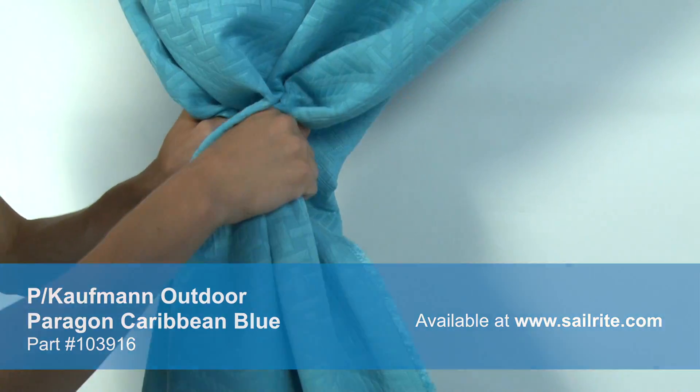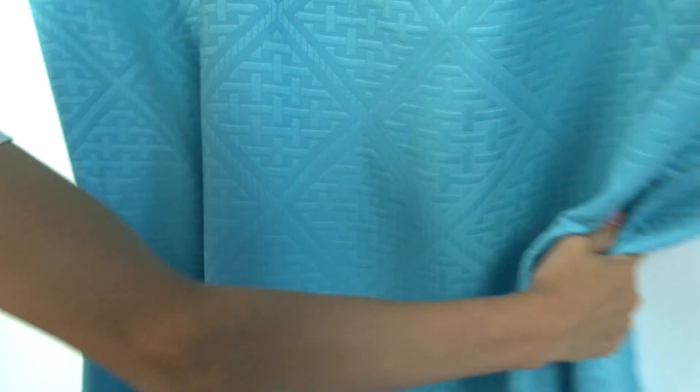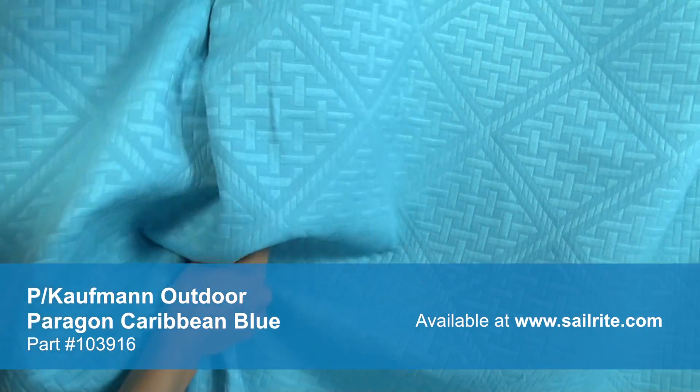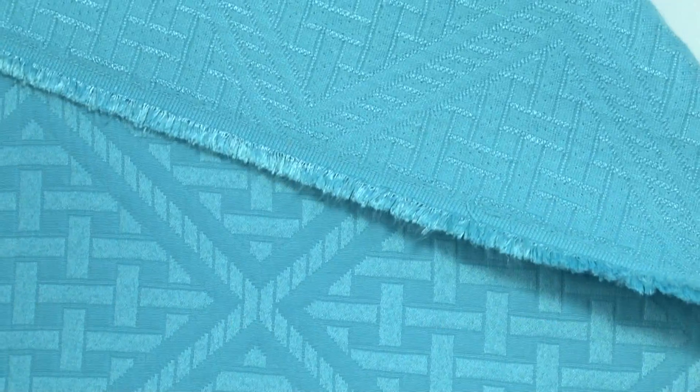P. Kaufmann Outdoor offers vibrant prints and classic coordinates to brighten up and enhance any outdoor space. The fabric is perfect for casual outdoor living with great fade resistance. This fabric features an antibacterial coating and is machine washable.